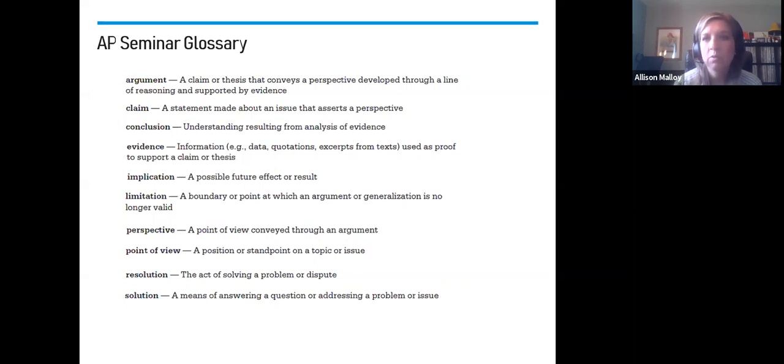Make sure we keep those clear. Claim is also there because claim is an argument. It's a statement made that asserts a perspective. Remember, claims are debatable, whereas when you go down to evidence, this is going to be information that's used to help support the claims. Conclusion is an understanding resulting from analysis. Implication is a possible future effect or result that can be intended or unintended. A limitation is a point in which your argument isn't valid, or this is a weak spot in what we're saying. Point of view is the position that you're taking on a topic, and resolution is the act of solving a problem, and solution is the means of answering a question or addressing a problem. Hopefully that was all review, but if not, this is a slide you can come back to as we're working through the rubric.